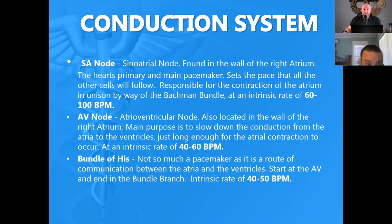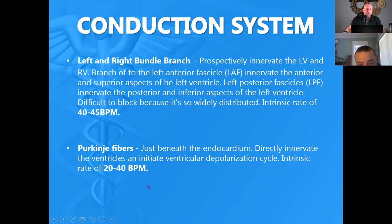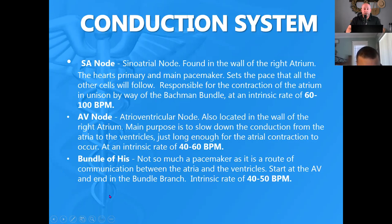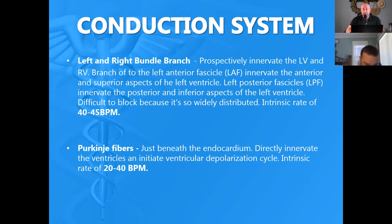The numbers we have to know: SA node normal rate is 60 to 100 — that's our normal heart rate. If the SA node goes down, the AV node takes over at 40 to 60. The bundle of His is just a bridge, not a true pacemaker. Purkinje fibers fire at 20 to 40. So the numbers are 60 to 100, 40 to 60, and 20 to 40. We have to know those numbers because when it comes time to identify rhythms, we need to know what we're looking at.